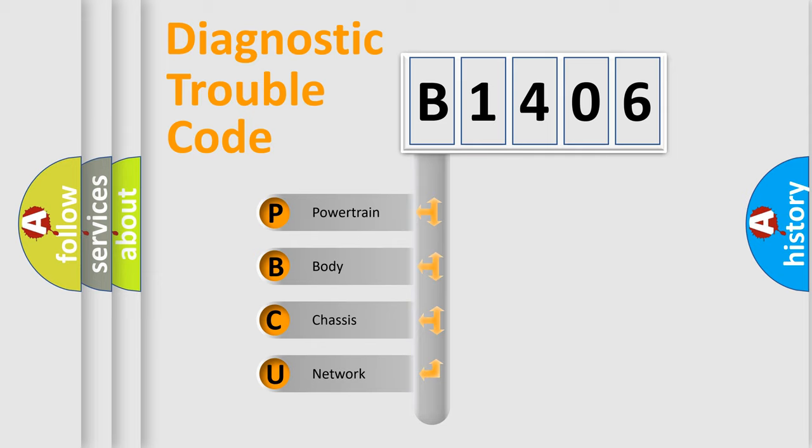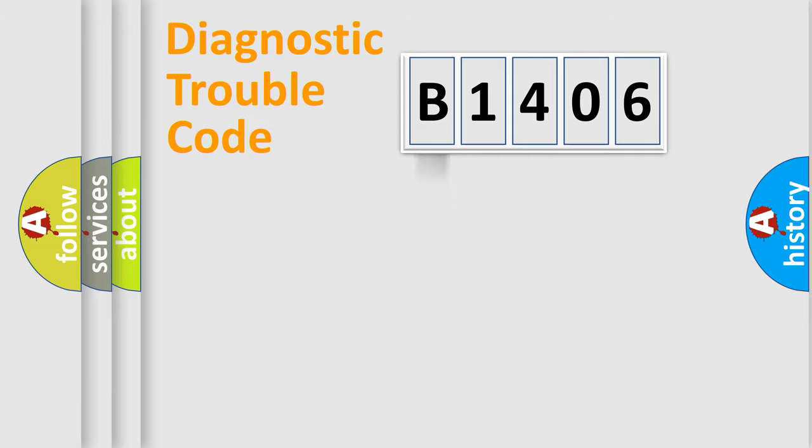We divide the electric system of automobiles into four basic units: Powertrain, Body, Chassis, and Network. This distribution is defined in the first character code.